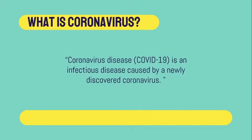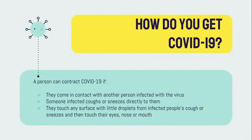What is coronavirus? Coronavirus disease, COVID-19, is an infectious disease caused by a newly discovered coronavirus. A person can contract COVID-19 if they come in contact with another person infected with the virus — someone infected coughs or sneezes directly to them, or they touch any surface with little droplets from infected people's coughs or sneezes and then touch their eyes, nose, or mouth.